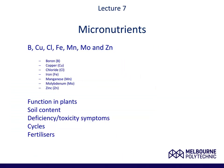In lecture 7 part 2 we are going to look at the micronutrients. As a rule these are required in much smaller concentrations than the macronutrients, but nevertheless they are very important for certain components of plant growth and development. There are a number of micronutrients we will cover: boron, copper, chloride, iron, manganese, molybdenum and zinc. For each we will look at the function in plants, soil content, deficiency or toxicity symptoms, their cycles, and the fertilisers used to commercially adjust for deficiencies when they occur.